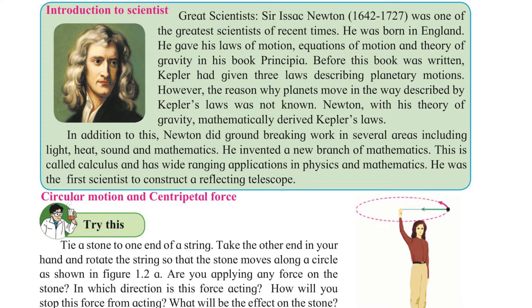Before this book was written, Kepler had given three laws describing planetary motions. However, the reason why planets move in the way described by Kepler's laws was not known. Newton, with his theory of gravity, mathematically derived Kepler's laws.